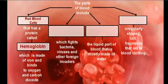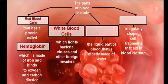Next we have white blood cells. White blood cells fight bacteria, viruses, and other foreign invaders. If anything gets into our body that's capable of making us sick, our white blood cells go and destroy it. When we are sick, that's when your white blood cells are in action, destroying pathogens that are disrupting our homeostasis.